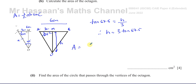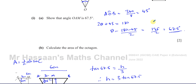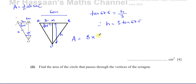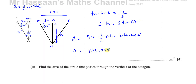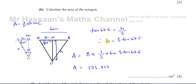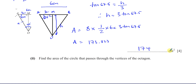The area of the whole octagon is 8 times one triangle, since there are 8 of these triangles. So it's 8 times half times base times height: 8 × ½ × 6 × 3 × tan(67.5). That gives us 4 × 6 × 3 × tan(67.5). Making sure we're in degree mode — that gives us 173.823, which rounds to 174 centimeters squared to 3 significant figures.